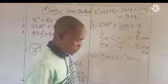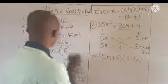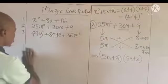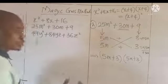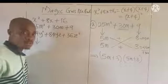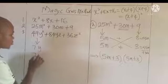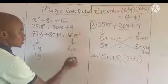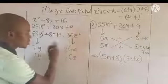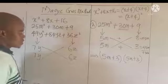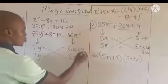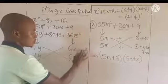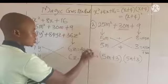Now let's look at the third example. The same thing we are going to do — try to split this into two factors whose product gives us 49y squared. So we have 7y and 7y. For the last term, we have 6z and 6z, because 6z times 6z gives us 36z squared. Using our cross: we multiply this by this and get 42yz, and we multiply this by this and also get 42yz.